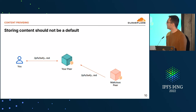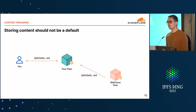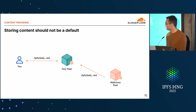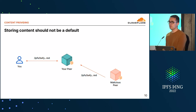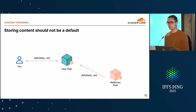Another aspect of the need for policy definition is: when you request content, what do you do with it? Do you store it? Do you cache it? Is it garbage collected? Do you re-provide it? This has been very clear for gateways — gateways request content on behalf of users and then have to cache it. But sometimes it's not content you want to keep. So you need to define policies around whether you want to keep content, re-provide it, and for how long.